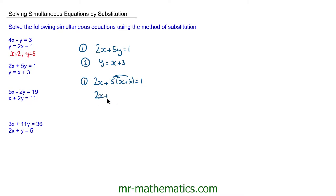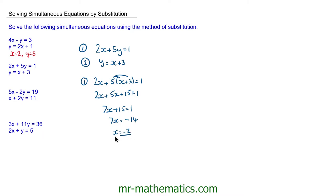Now we can expand these brackets out. So we have 2x plus 5x plus 15 is equal to 1. We can collect the x terms: so we have 7x plus 15 is equal to 1. We can take away the 15 from both sides, so we get negative 14, and x is equal to negative 2. Now we can substitute x equals negative 2 into either equation — I'm going to choose equation 2.